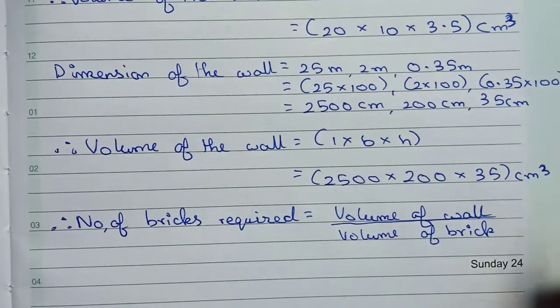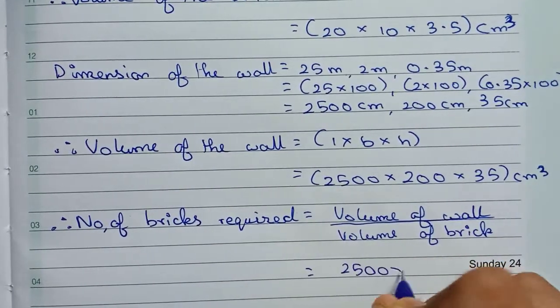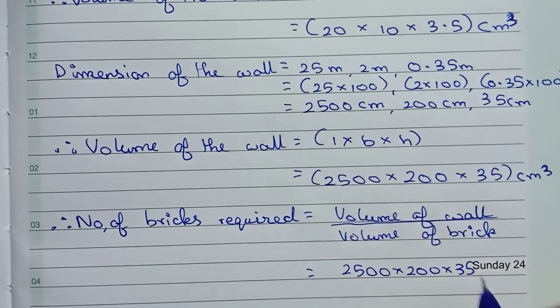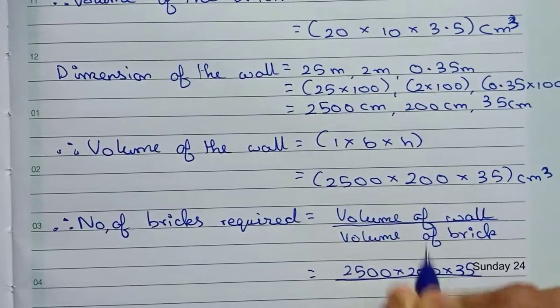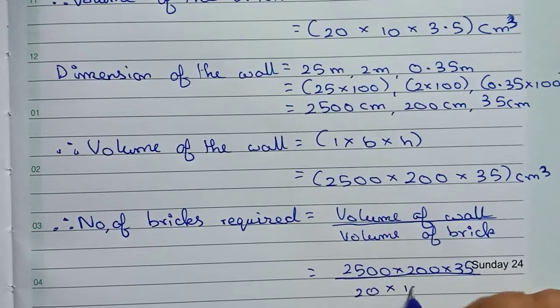So it will be volume of the wall—2500 × 200 × 35—divided by the volume of the brick, which is 20 × 10 × 3.5.